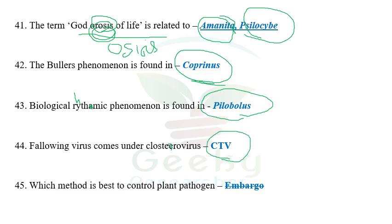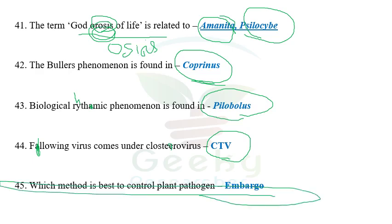The next question: which virus comes under Closterovirus? Among the options given, Citrus tristeza virus comes under Closterovirus. Other options come under different genera or virus families, but Citrus tristeza virus is under Closterovirus. The next question: which method is the best to control plant pathogens? I think it might be embargo or quarantine, but I'm not sure. They may have given options like international quarantine, embargo, or domestic quarantine. If we control at the domestic level, it may be easier to control at the international level.